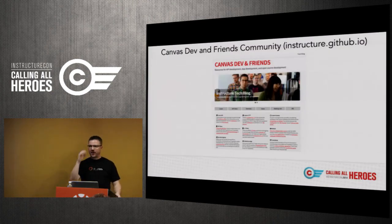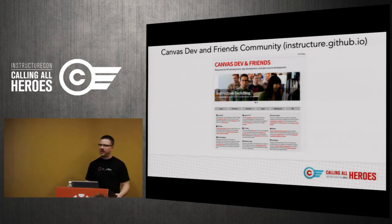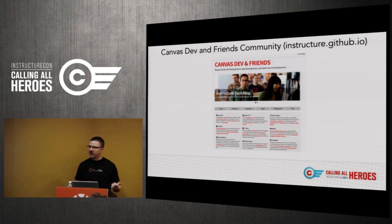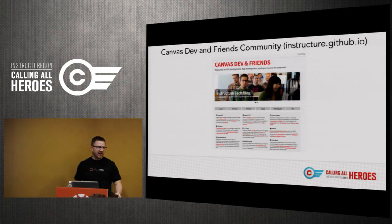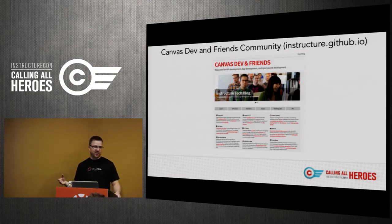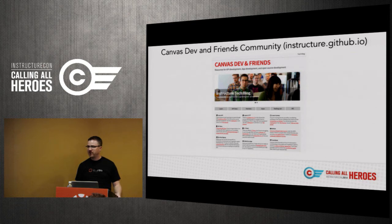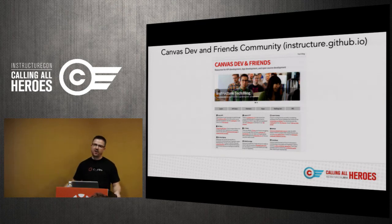Last I wanted to give a plug for our Canvas Dev and Friends community at instructure.github.io. On this site we have multiple resources for developers: API documentation, ability to request a Canvas developer key for API access, source code links for Canvas, information on our IRC Freenode channel, and a Google mailing list. Your development teams or people working on integrations with Canvas can go there and ask questions — answered by the community or by engineers constantly monitoring it. Sometimes you can go to your CSMs and ask them, or you can go right here and get an answer directly.